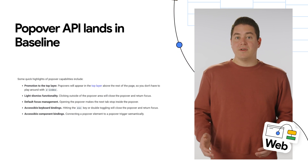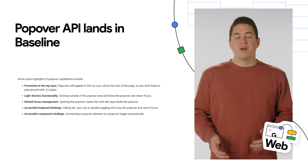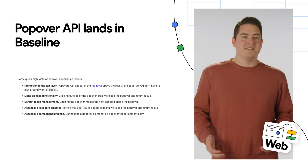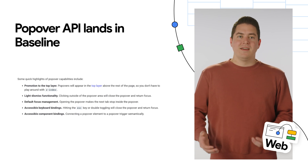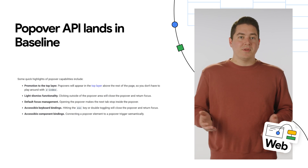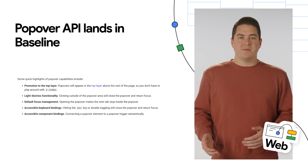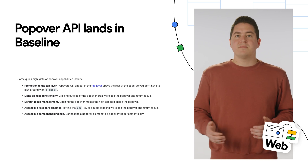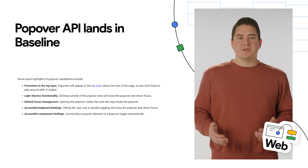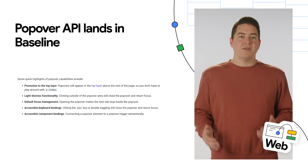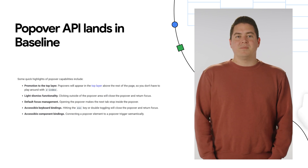Starting with the web, the popover API lands in baseline and in all major browsers, which means it's safe to use in your applications and websites. If you're unfamiliar with the API, it allows you to promote content to the top layer, add light dismiss, default focus management with tabbing, and finally accessible keyboard and component bindings. The popover API makes it possible to create complete interactions that previously required JavaScript. You can learn more on the web.dev blog.